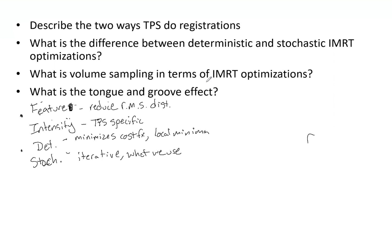Volume sampling uses sample points in a random pattern to reduce calculation time and focus on regions of importance. If you have a large structure with many sample points, it's going to take a lot longer to calculate.